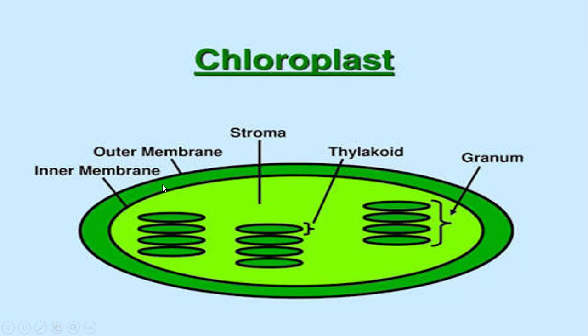Between the two membranes is the intermembrane space. The inner region — which you can compare to the cytoplasm of a cell — is said to be the stroma of the chloroplast.